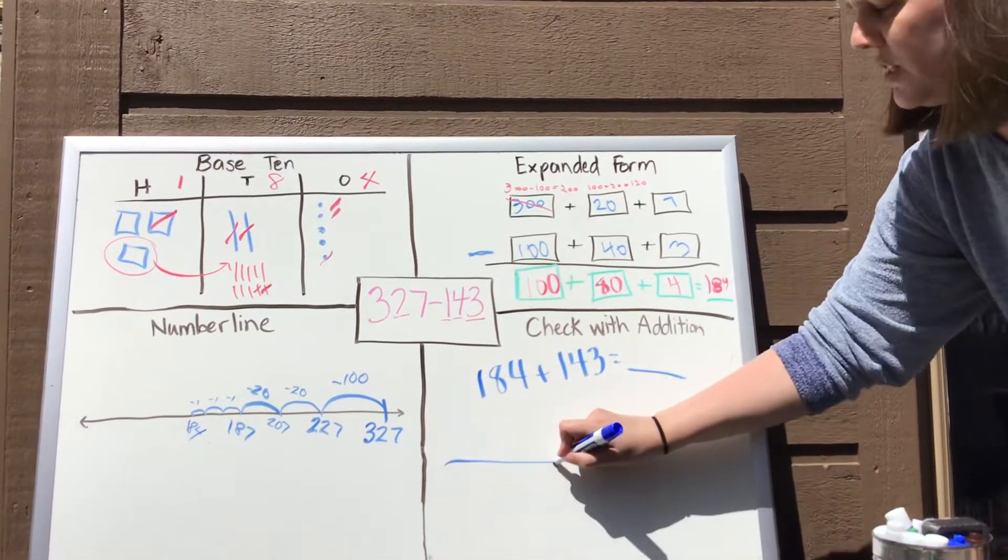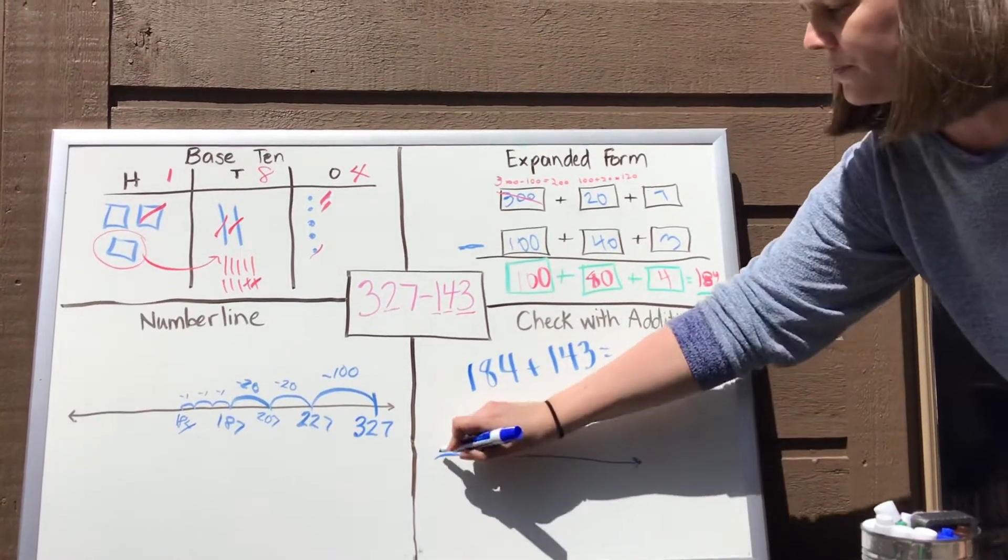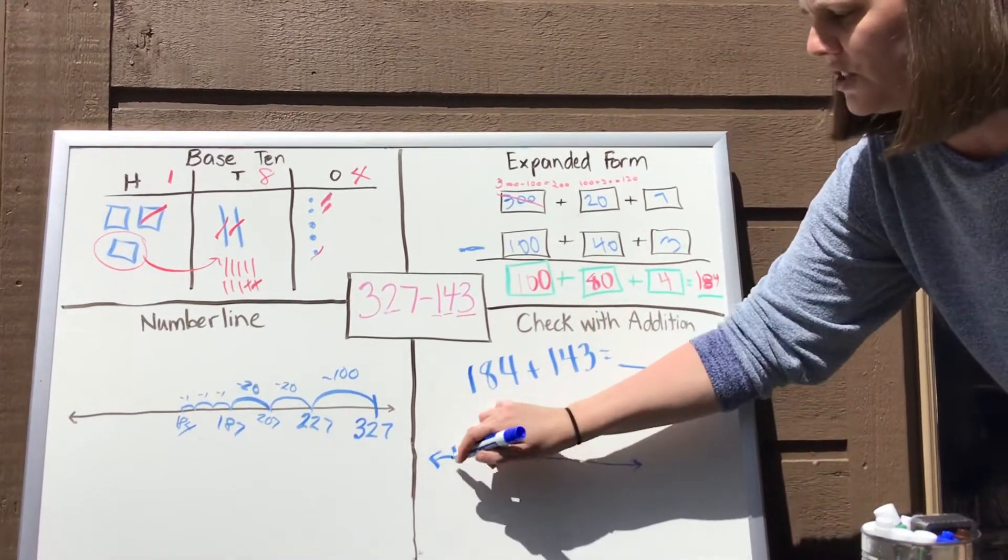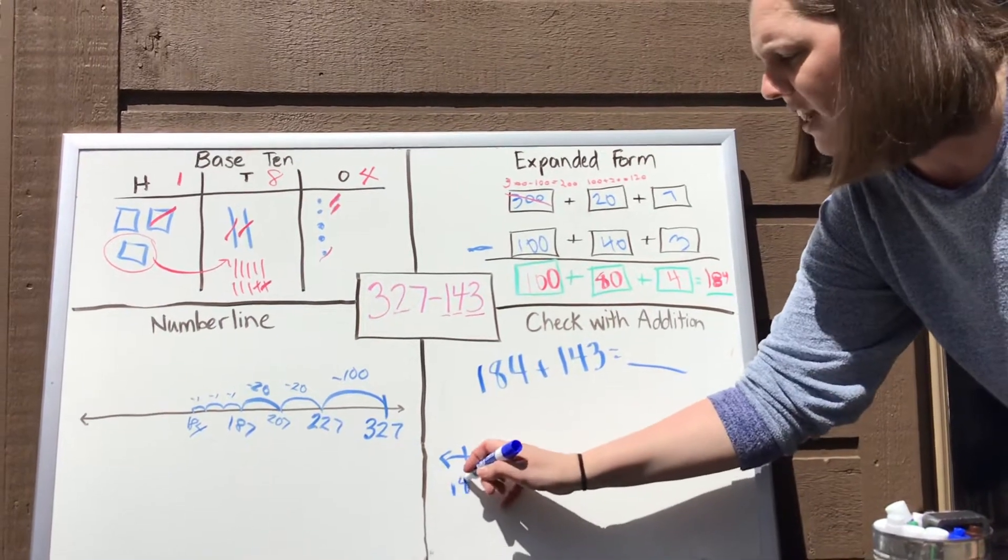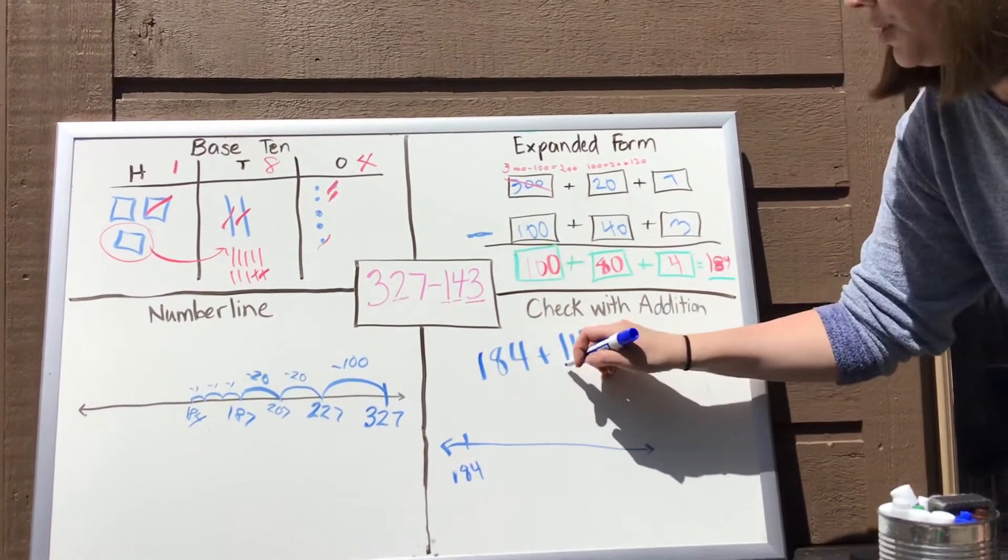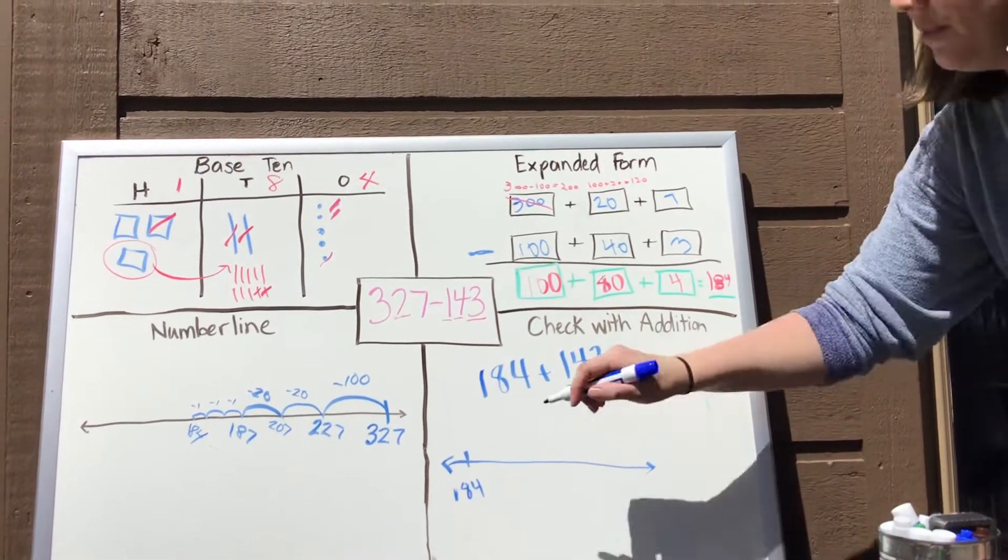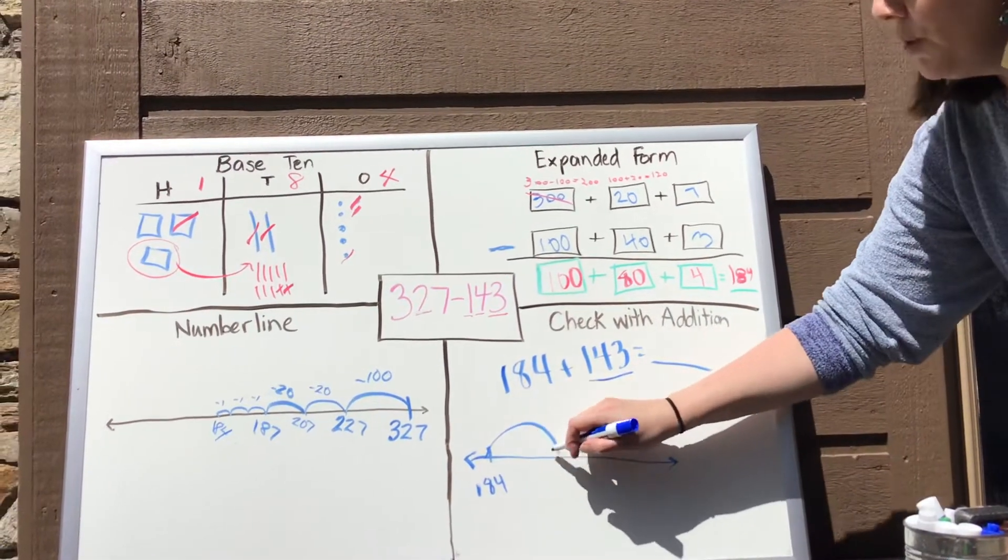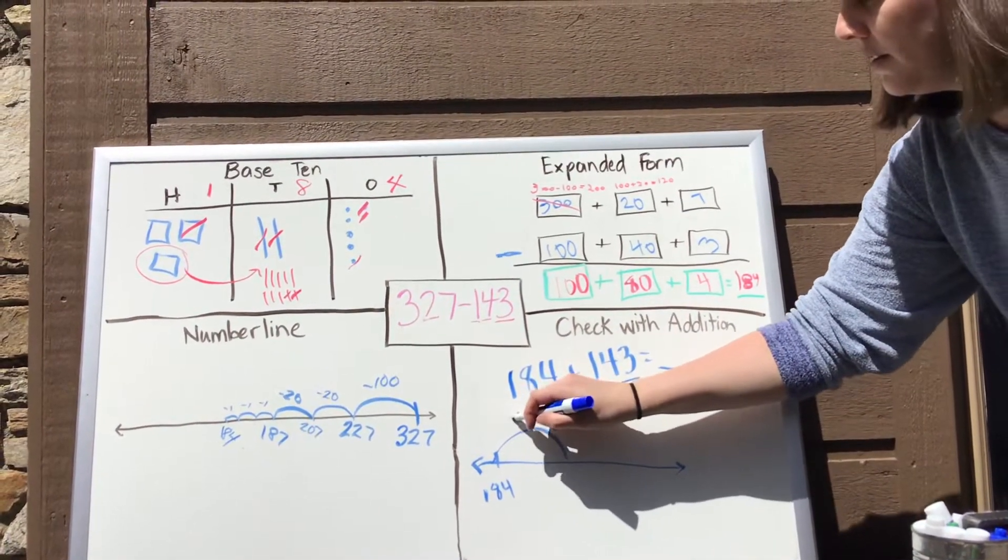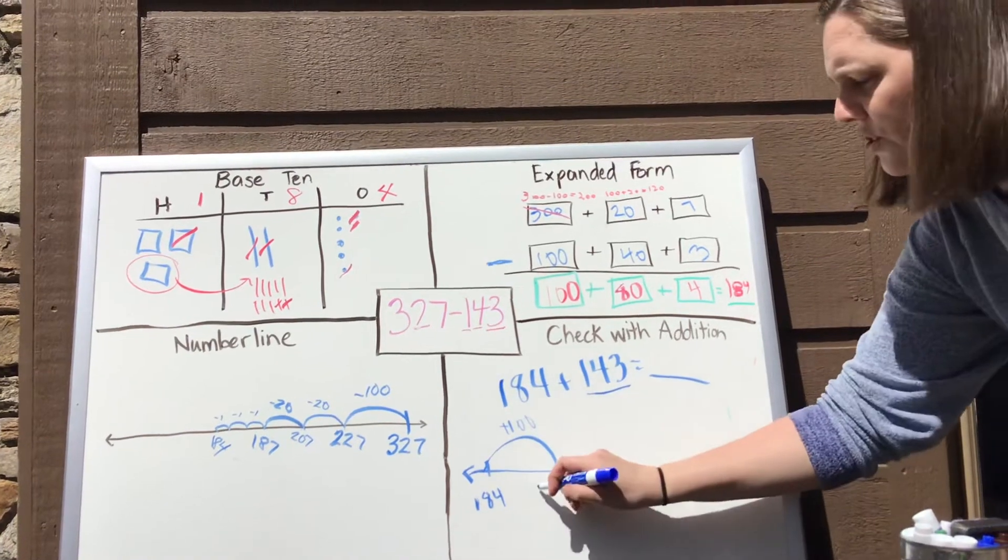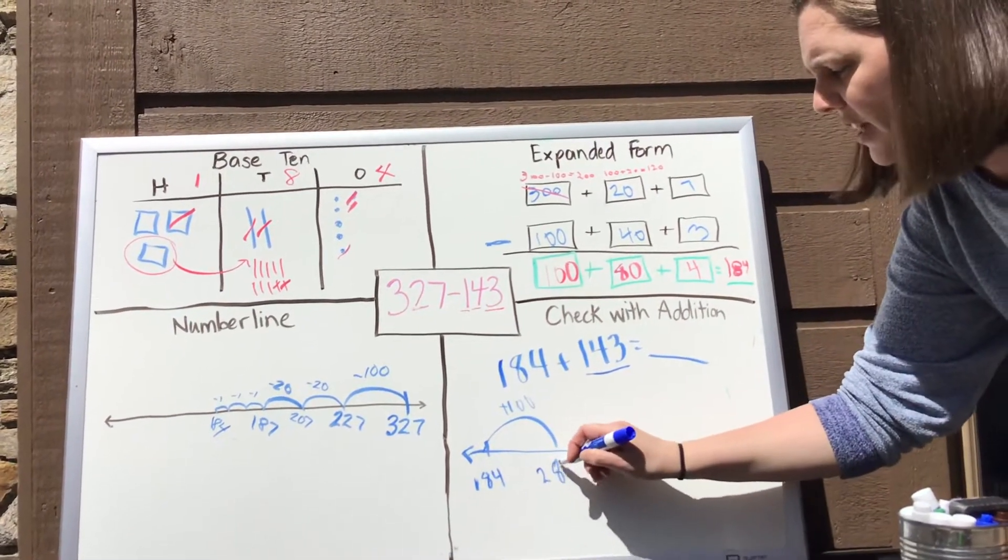I'm going to choose to do this problem on a number line. So I'm going to start with my larger number, which is 184. And I'm going to jump 143. So I'm going to make a one jump of 100. And that's going to get me to 284.